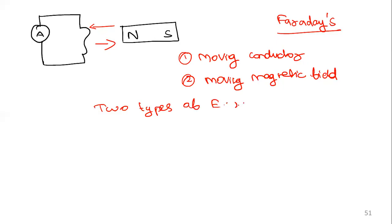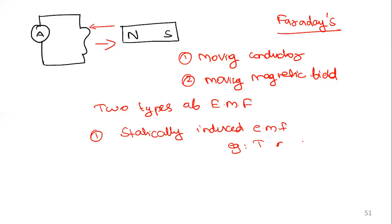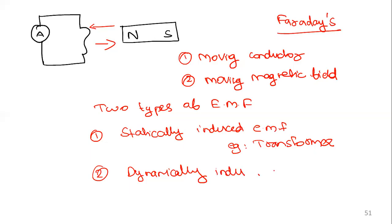Two types of EMF will be produced. The first is statically induced EMF, which is what happens in a transformer, because a transformer is a static device. The second is dynamically induced EMF. The interaction of time-varying electric and magnetic field results in a wave called an electromagnetic wave.